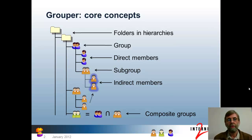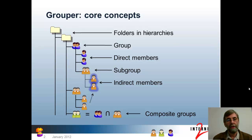Here's a depiction of some of the core concepts and objects that Grouper has managed pretty much from the beginning. First of all, it has a notion of folders, sometimes called stems or namespaces. Folders are simply places in which other objects managed in Grouper can be organized, and permissions and delegated access to them can be assigned. The main thing a folder can contain is a group. A group has direct members and can also have subgroups. The direct members of a subgroup are known as indirect members, or effective members, of the group.